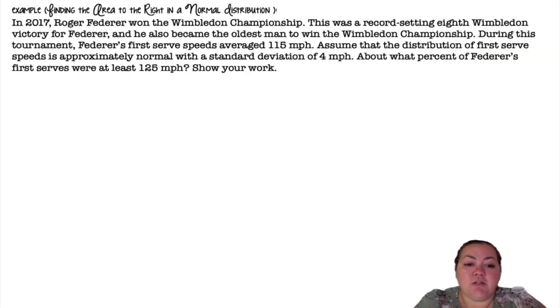Finding the area to the right in a normal distribution. In 2007, Roger Federer won the Wimbledon championship. This was a record-setting eighth Wimbledon victory for Federer and he also became the oldest man to win the Wimbledon championship. During this tournament, Federer's first serve speeds averaged 115 miles per hour. Assume that the distribution of first serve speeds is approximately normal with a standard deviation of 4 miles per hour. About what percent of Federer's first serves were at least 125 miles per hour?